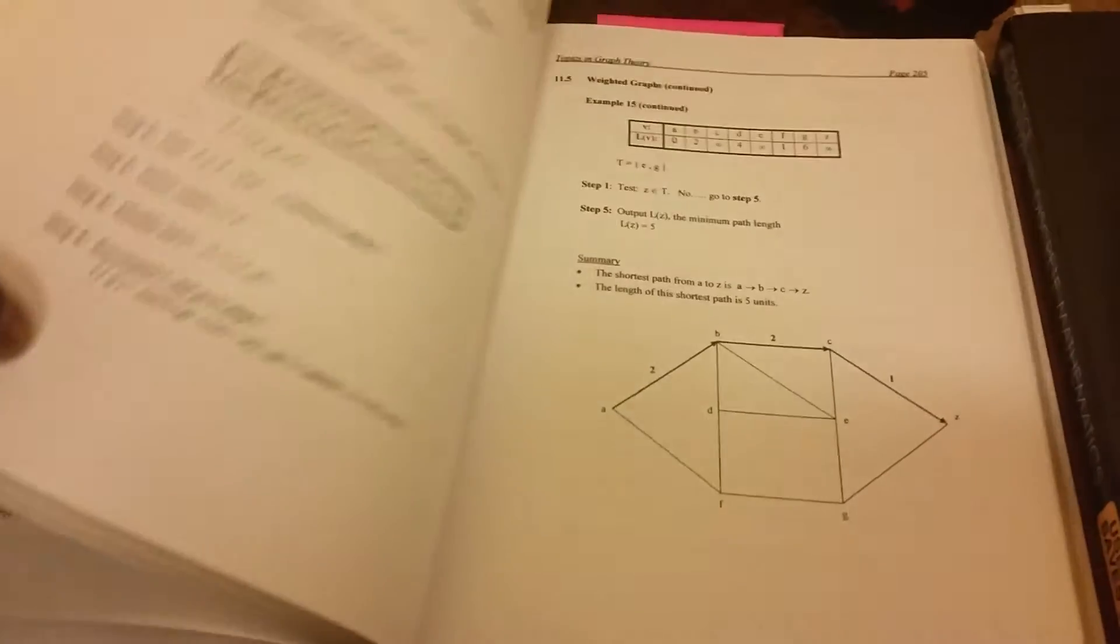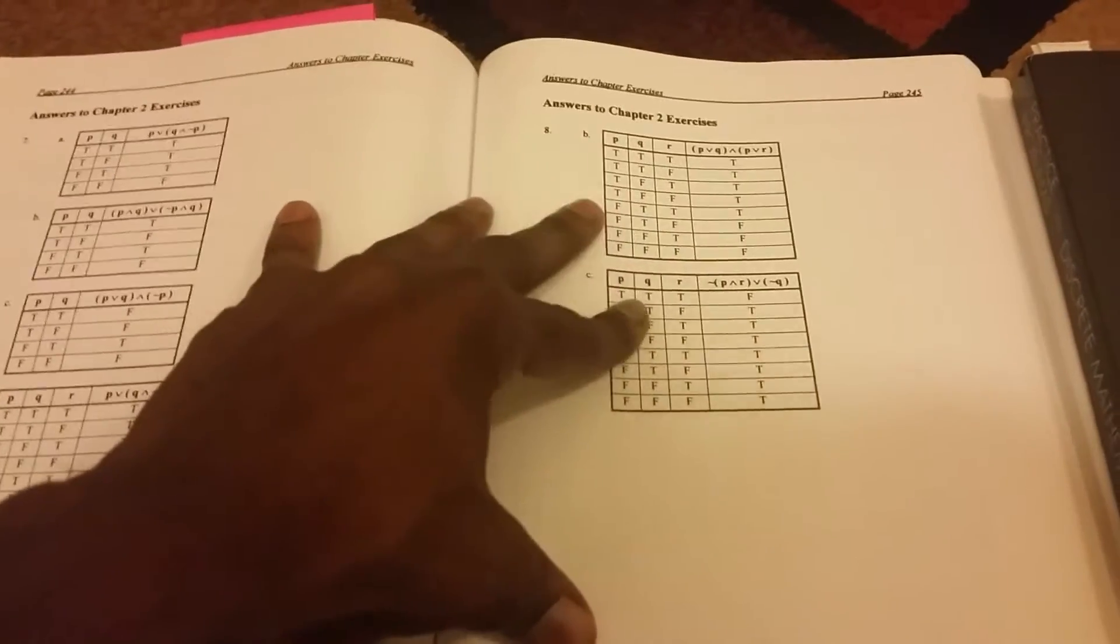And then in the back, they have the answers. So let me move back here. So yeah, here you go. You can see answers to chapter two exercise. They give you the answers in the back. So you can double check your answers and things like that with this answer key.